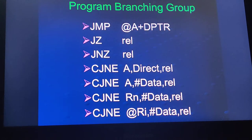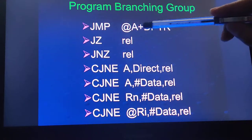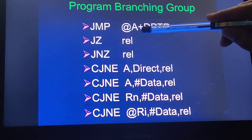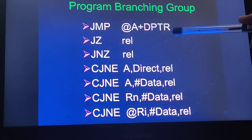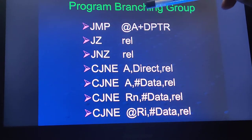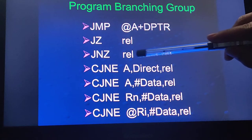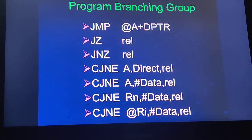Here are a few more branching instructions. JMP @A+DPTR jumps to the address that is the summation of the accumulator contents and the DPTR contents. JZ is jump on zero, and JNZ is jump if not zero — these are conditional branch instructions. Earlier we discussed unconditional instructions; here a certain condition is tested, such as the zero flag, carry flag, or parity flag.